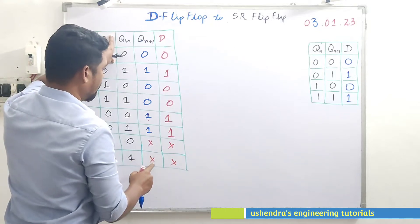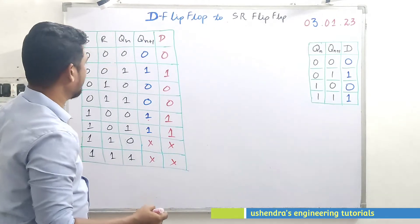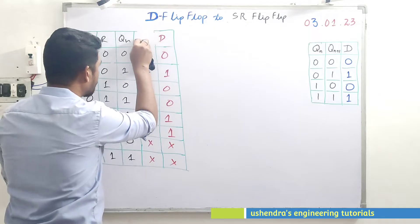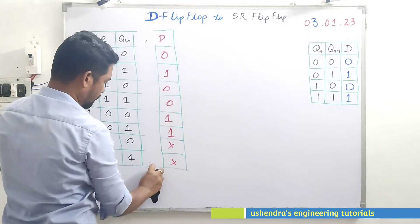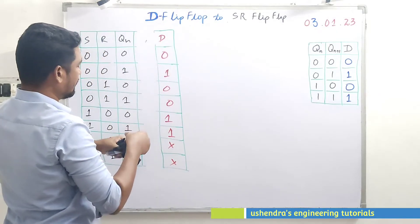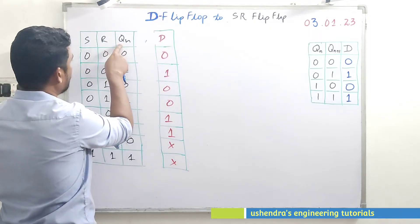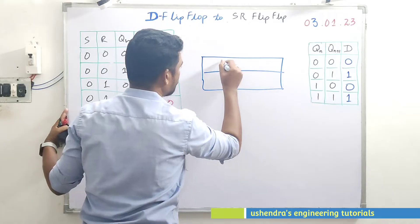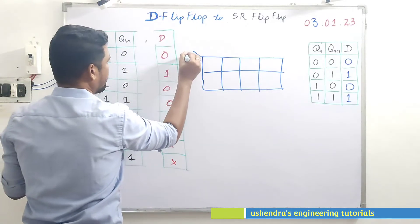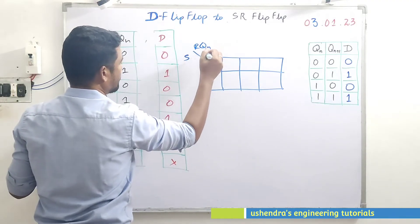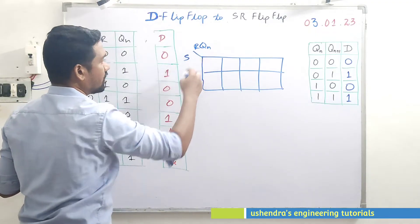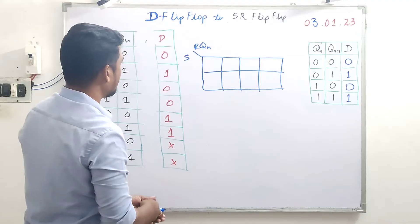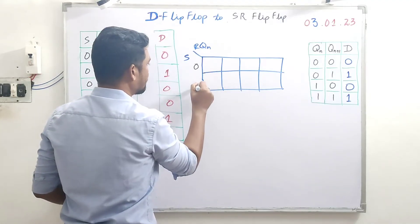Once we complete the tabular form, we get a K-map ready. We have to express D in terms of S, R, and Qn. To avoid confusion I am erasing the unnecessary columns. We need a three-variable K-map to reduce this expression. The K-map has S along one axis and R and Qn along the other, giving us S-bar and S on one side and combinations 00, 01, 11, 10 for R and Qn.